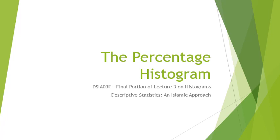Bismillahirrahmanirrahim. This is part of the sixth portion of lecture three on histograms, part of the course on descriptive statistics and Islamic approach. In this part we'll talk about the percentage histogram, also called the probability histogram.